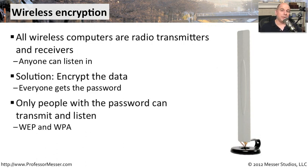That means when somebody needs access to the network and wants to communicate over this secure connection, you'll need to provide them with the key that will allow them access to the network. Through the years, we've used a couple of different kinds of encryption methodologies on our wireless networks. One is called WEP, and the other is called WPA.